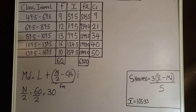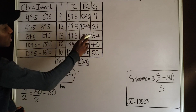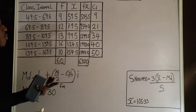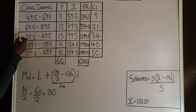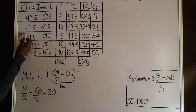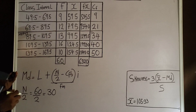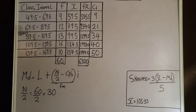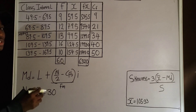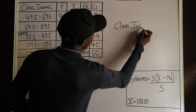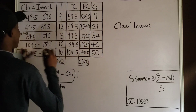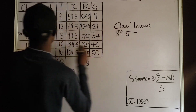To identify the median class, I check where 30 falls among the cumulative frequencies. The value 30 falls within the range where the cumulative frequency goes from 21 to 34. So the class interval corresponding to this range is the median class. Tracing to the left, the median class interval is 89.5 to 109.5.